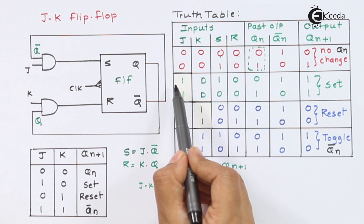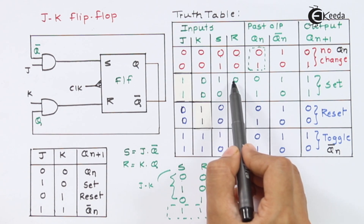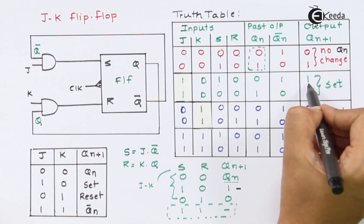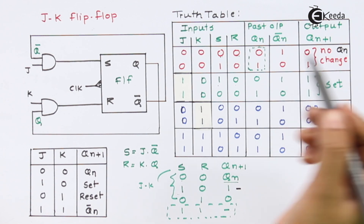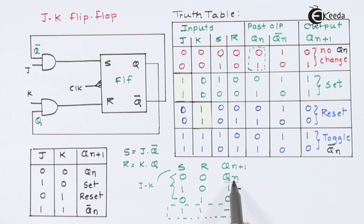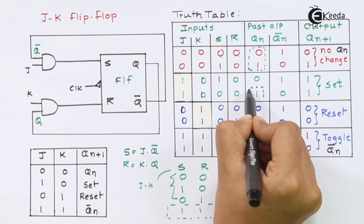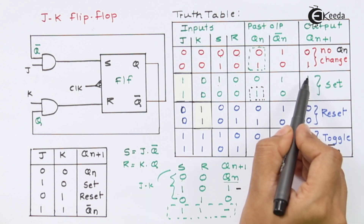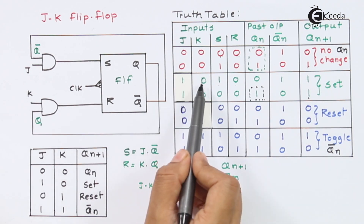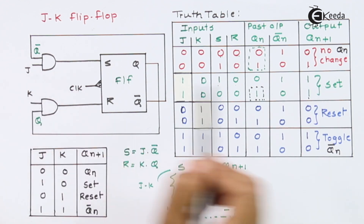Next, when J=1 and K=0, S=1 and R=0. Since S=1 and R=0, this is the set condition and the output comes out as 1. In the second sub-case with QN=1, S=0 and R=0, so the output remains at past output QN which is 1. In both cases the output is 1, so for J=1 and K=0, the JK flip-flop remains in the set condition.